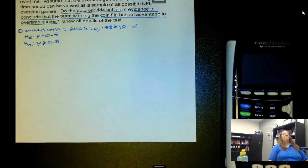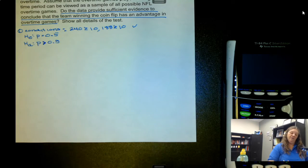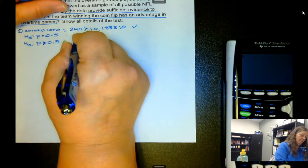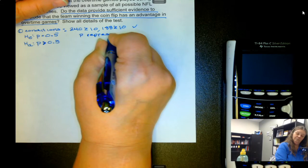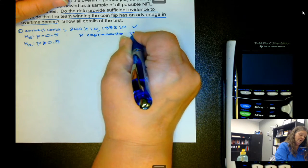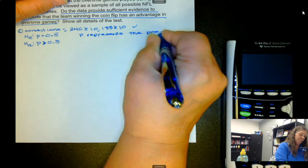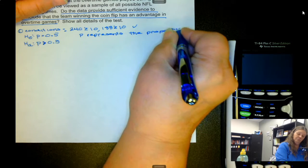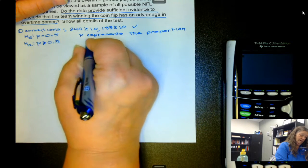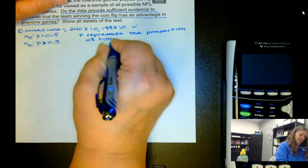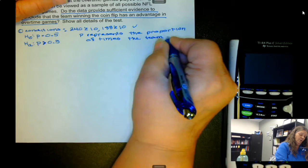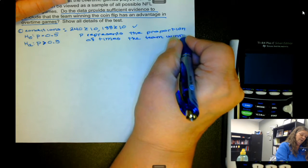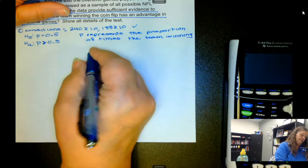We use 0.5 because if there's no advantage, you would expect each team to win about 50% of the time. Now p represents the proportion of times the team winning the coin flip wins the game.